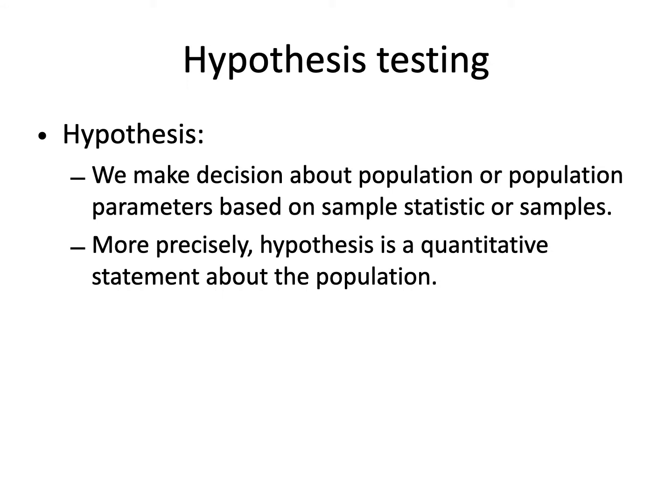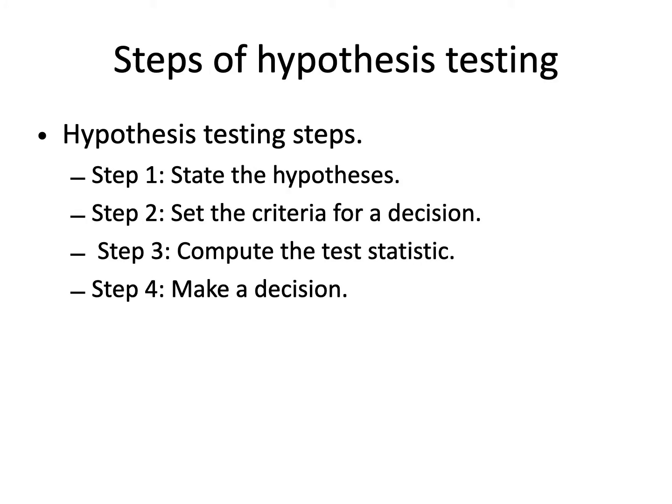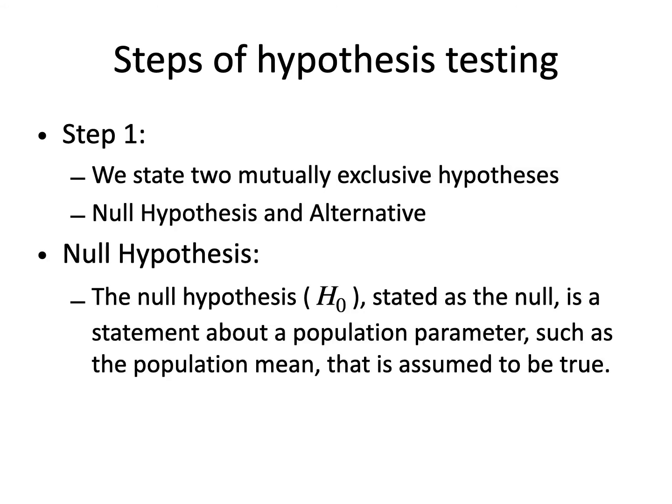There are basically four steps for hypothesis testing. First, we have to state the hypothesis. Then we set the criteria for the decision. In the third step, we compute the test statistic. And finally, we make a decision. To begin, we identify the hypothesis or claim that we feel should be tested.